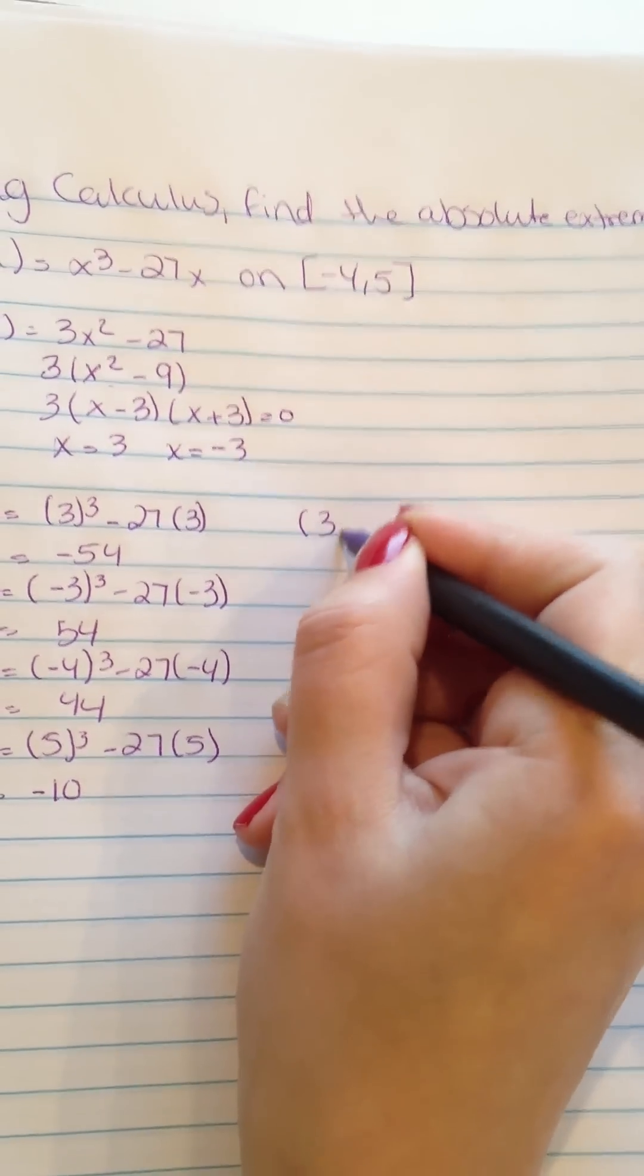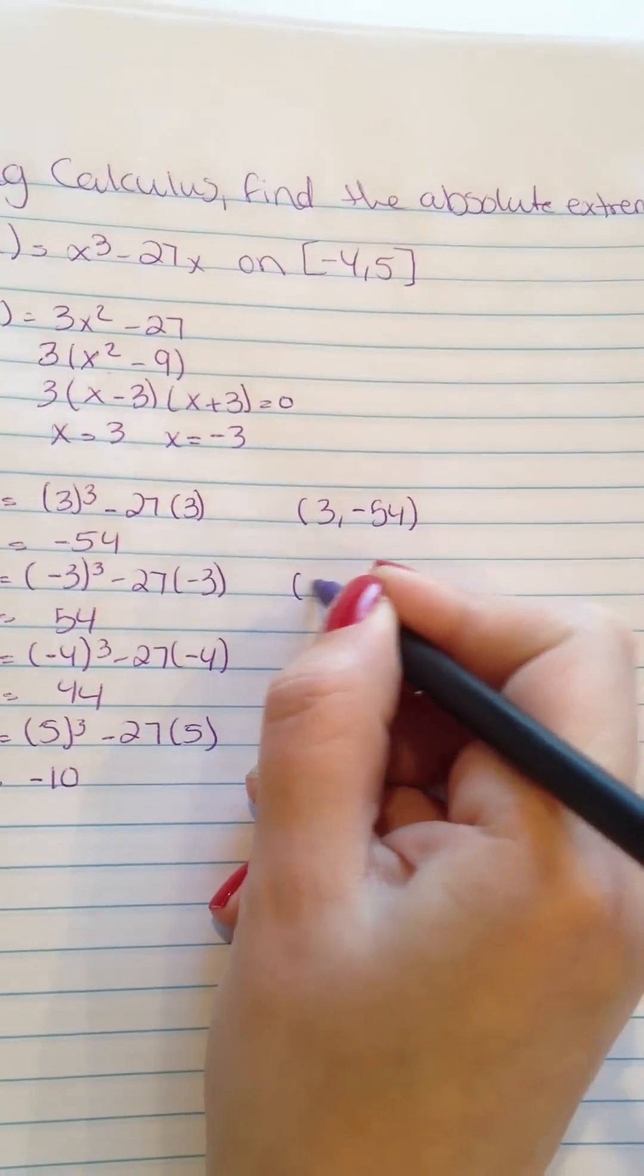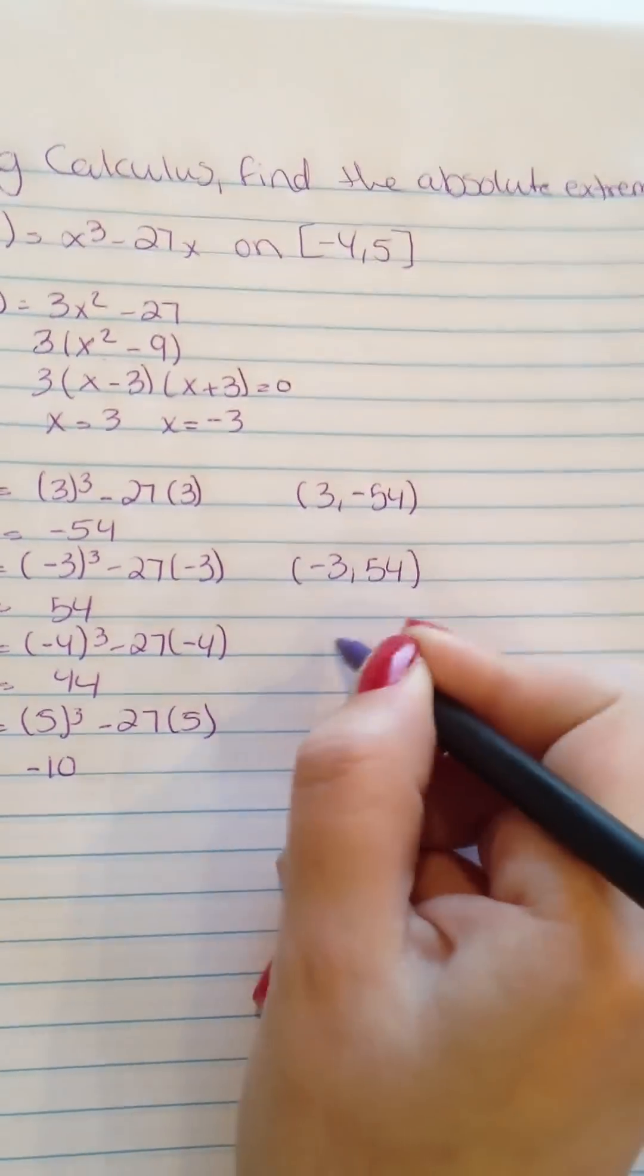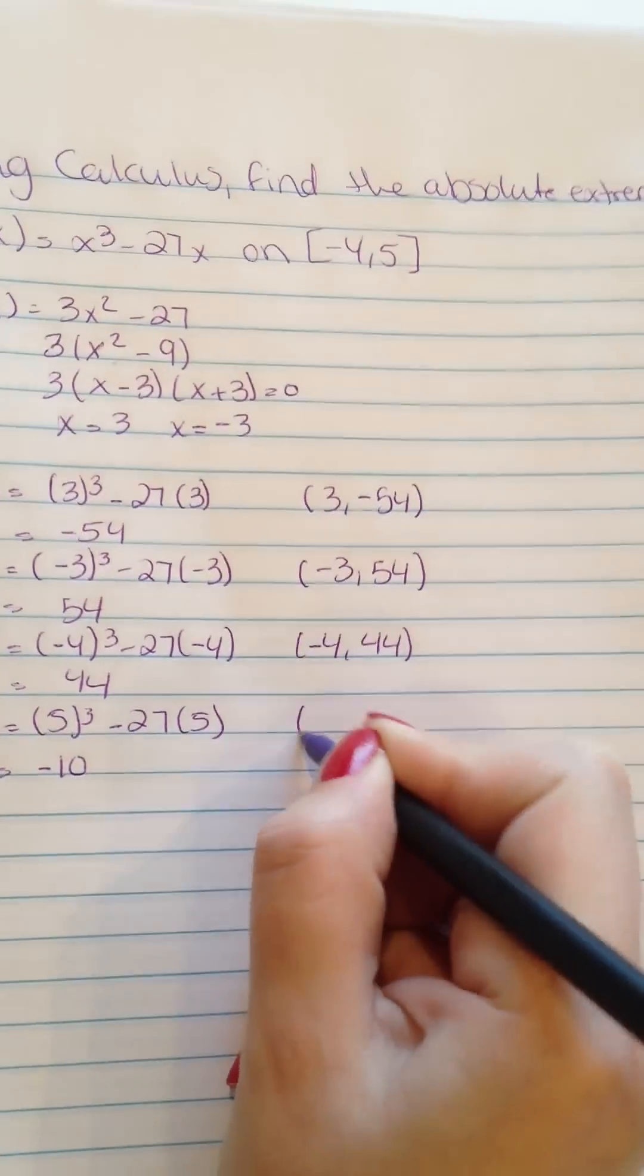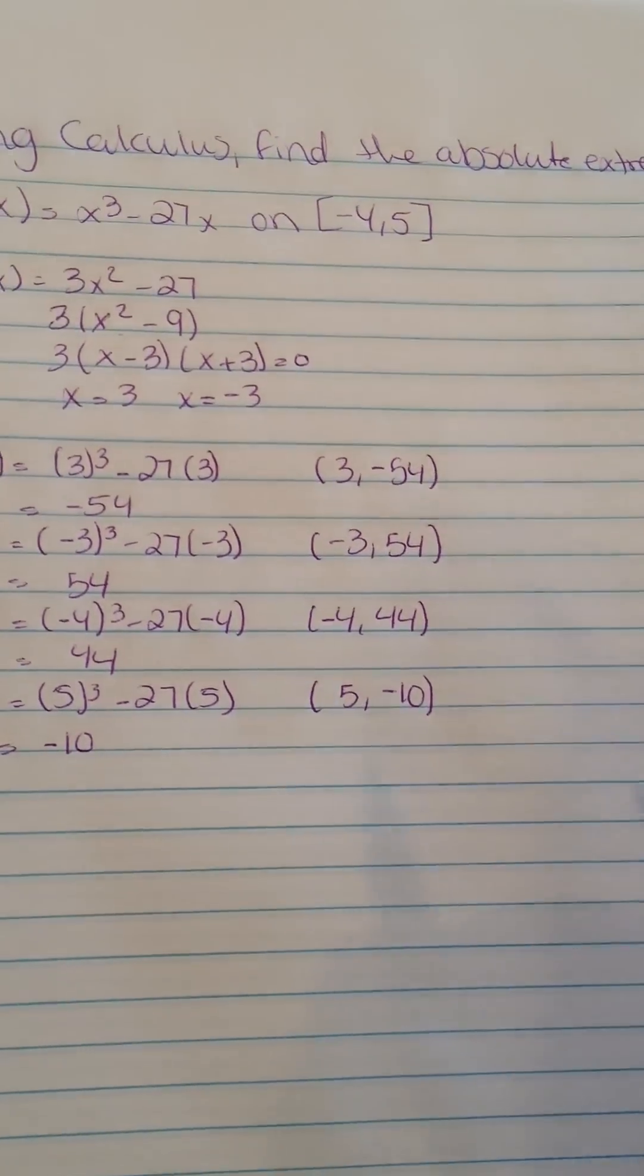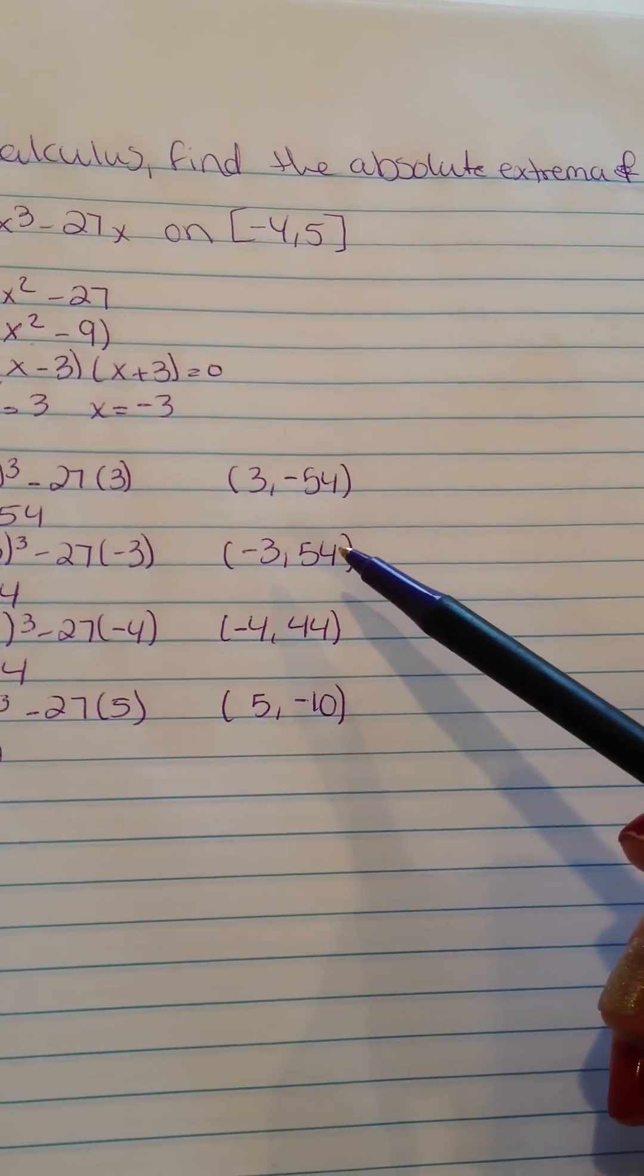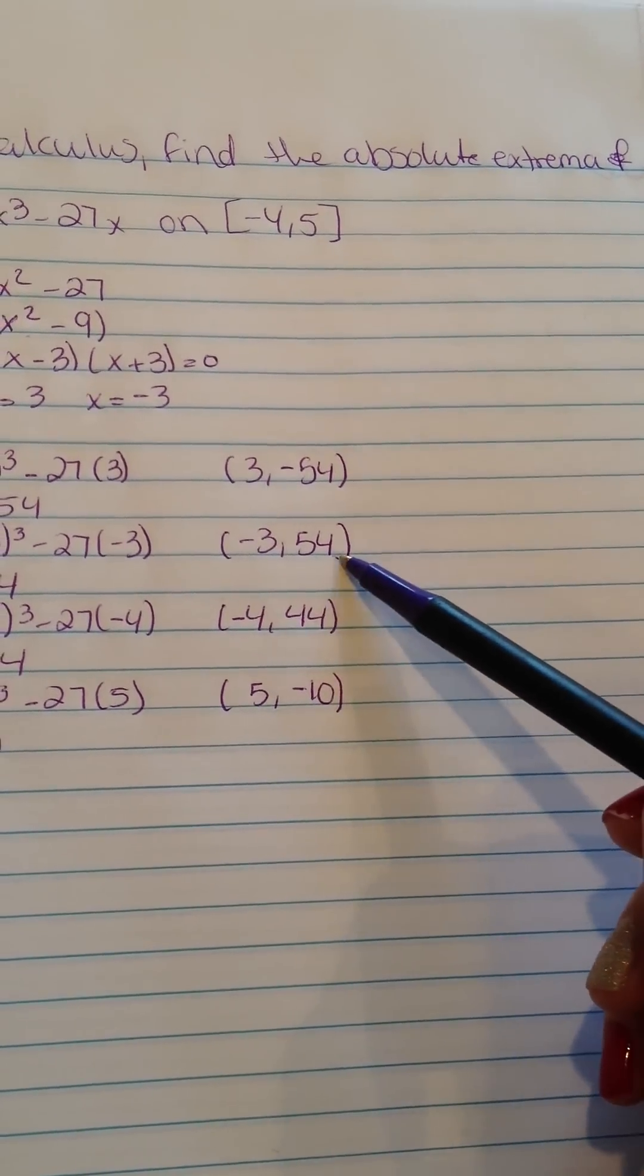So the pairs are going to be (3, -54), (-3, 54), (-4, 44), and (5, -10).